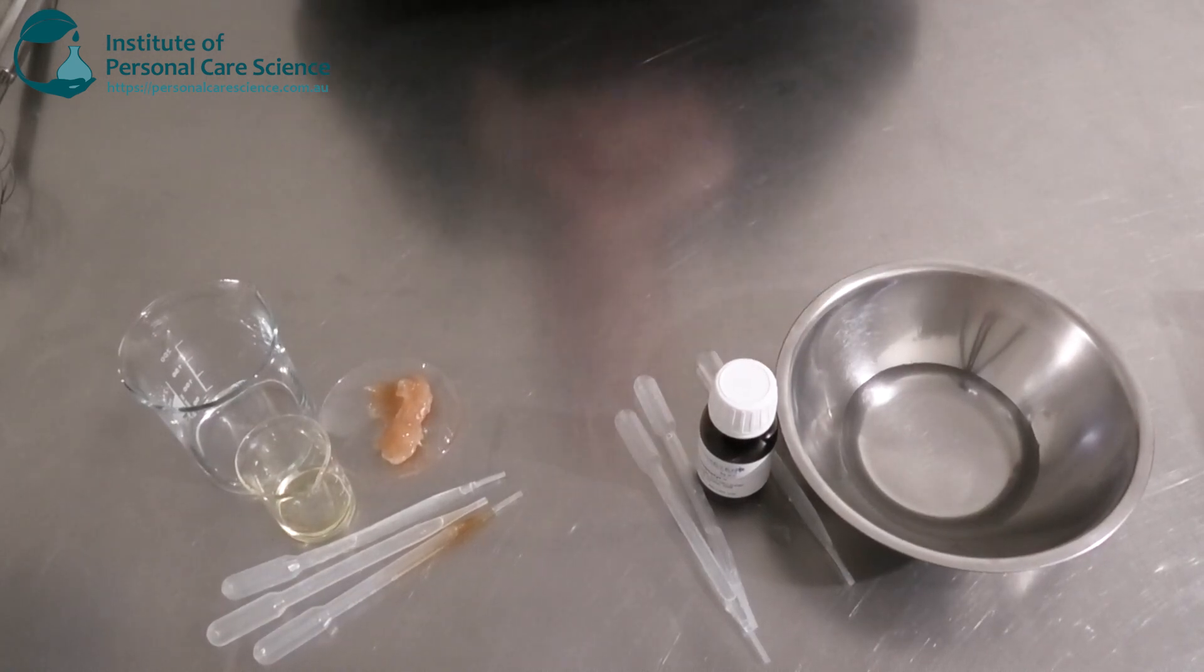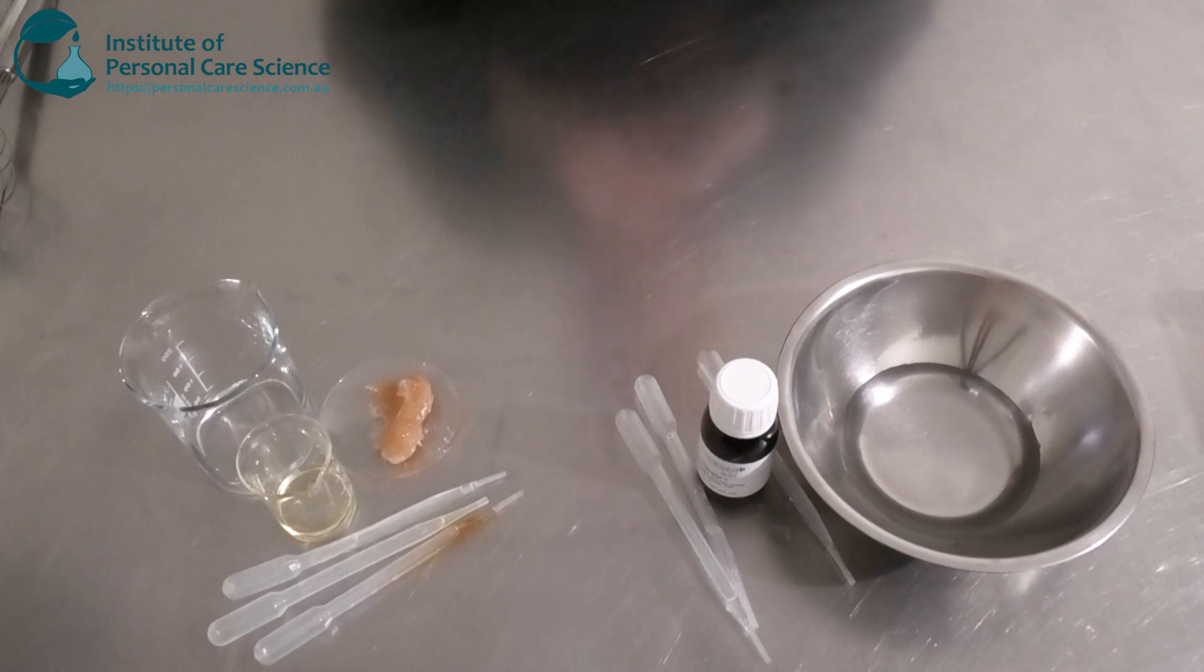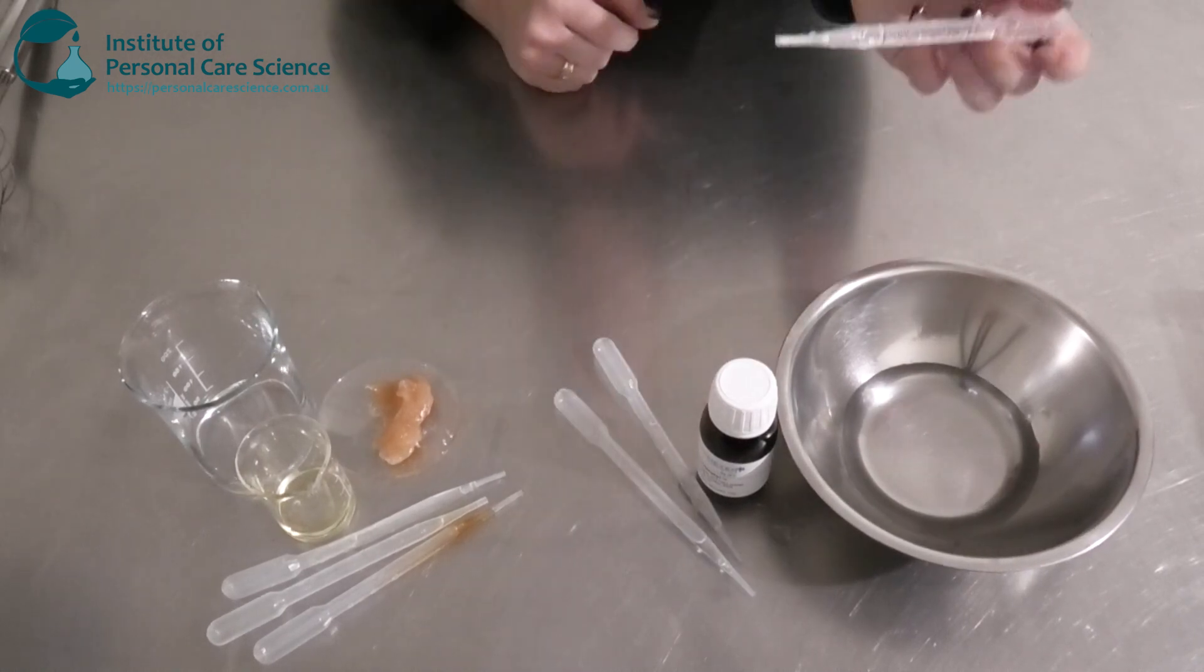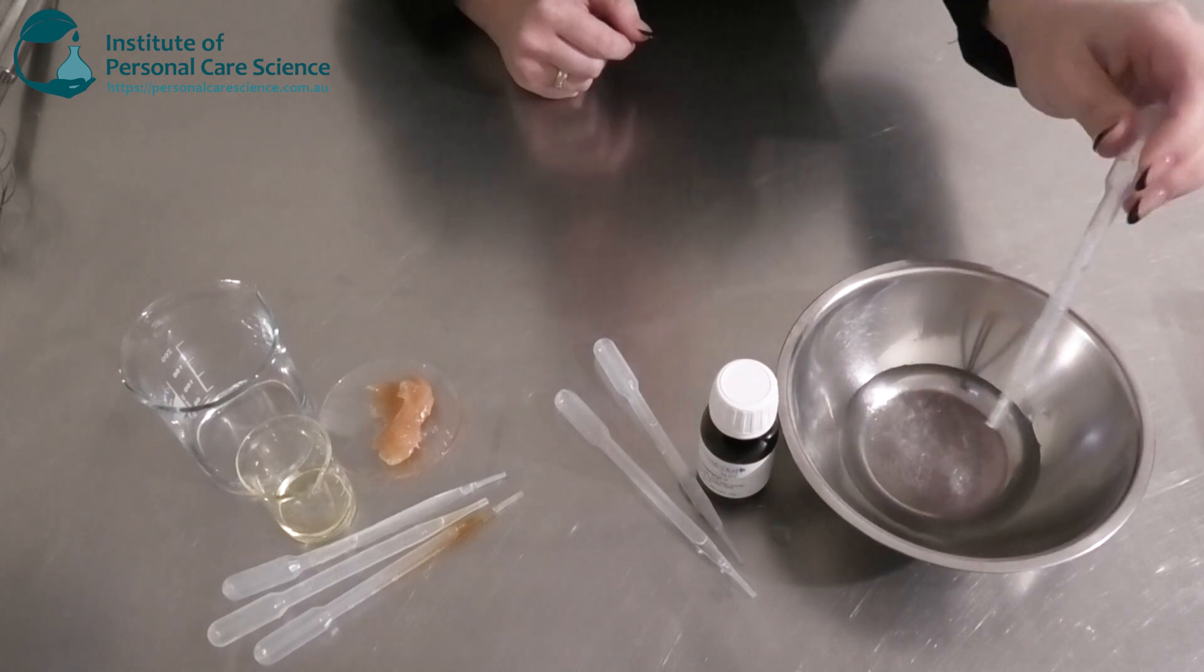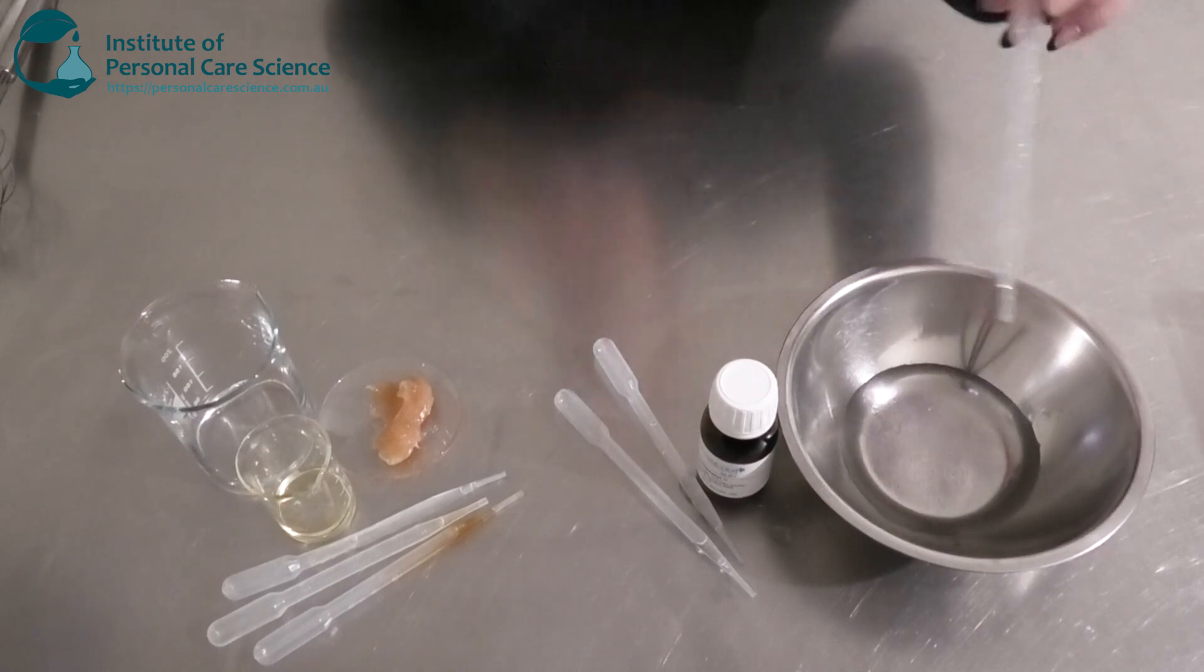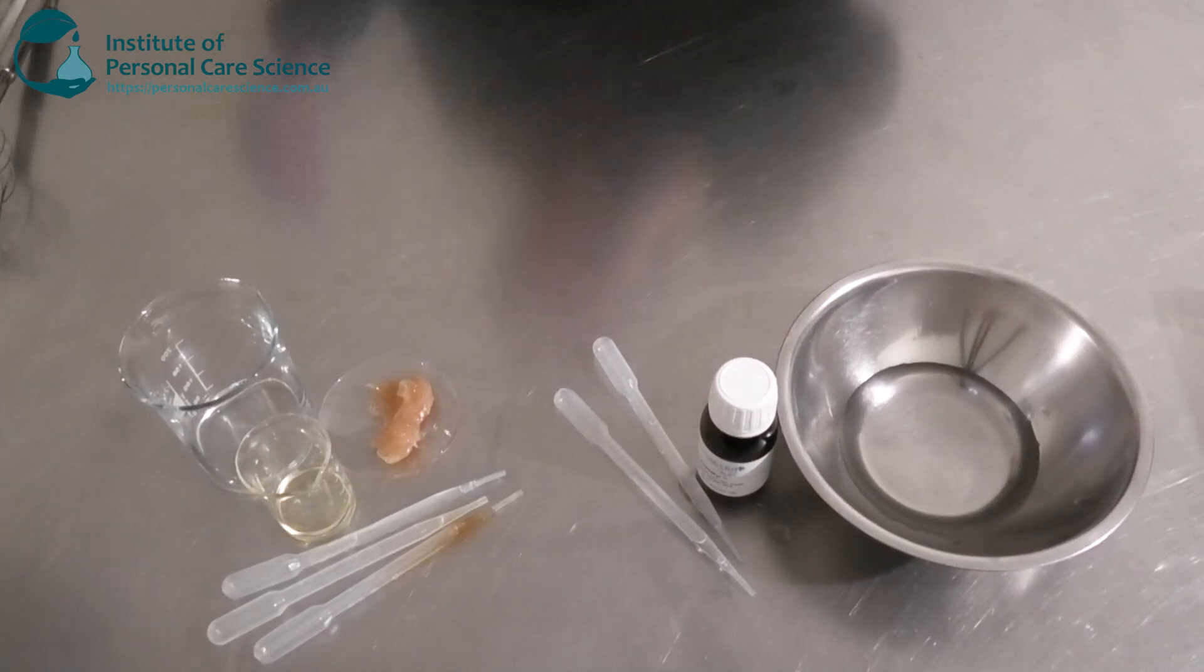Now starting off, I've got my water phase here. Now to this, I'm going to be adding some propane diol. This is a humectant. This is non tacky and sticky and it's also going to protect the skin from transepidermal water loss. So it's going to help with the barrier.